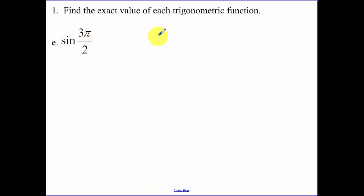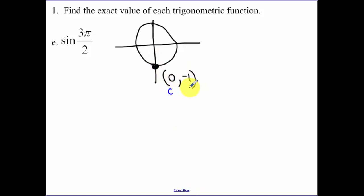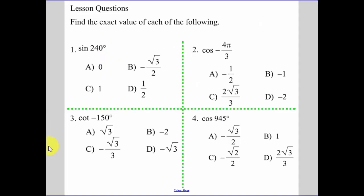When 3π/2 is on a quadrant boundary, you can't use our reference angle tricks. You have to realize the unit circle has a radius of 1. The point at 3π/2, going down from the center of the circle, would be (0, negative 1). Remember, the x-coordinate is cosine and the y-coordinate is sine. So the sine of 3π/2 is negative 1. Okay, those are your lesson questions — you have some multiple choice, so please make sure those are submitted on time.